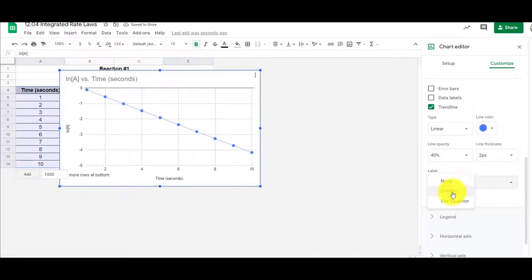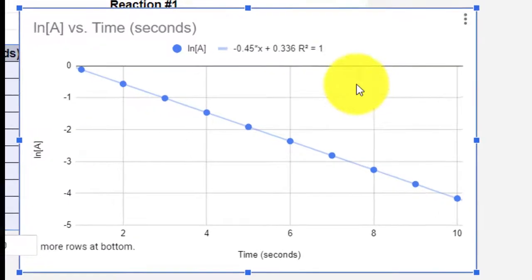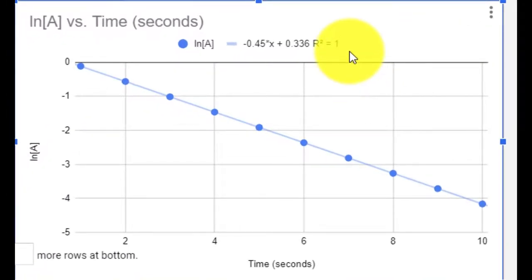And for my label, I can use an equation. And I can show the r squared. My r squared value is one. Alright, so I very much have a linear equation. And what I'm seeing here is that the slope of my linear equation is negative 0.45. So we've discovered that this is a first order reaction and that the K value for this is 0.45.